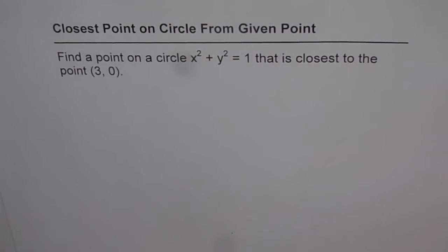Closest point on circle from given point. This is an extremely good question here. Be careful when you solve this question and take note of every little thing which I am doing here. Find a point on a circle x square plus y square equals to 1 that is closest to the point 3,0.